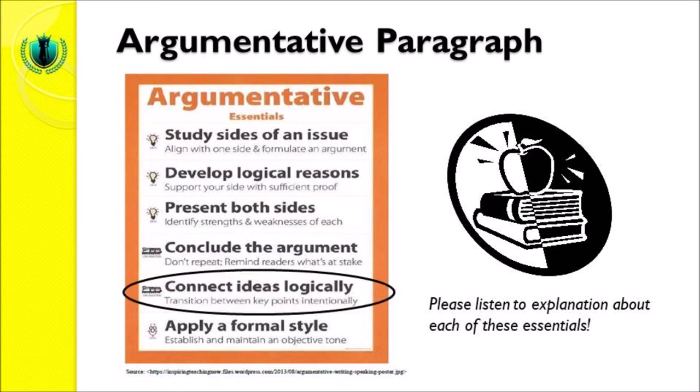The fifth essential is connect ideas logically. It means that transitions between key points are used intentionally and properly. The connection between sentences in an argumentative paragraph is linked using transitions — for example, furthermore, moreover, therefore, or because of that. There are many other examples of transitions that you can read in your writing textbook.